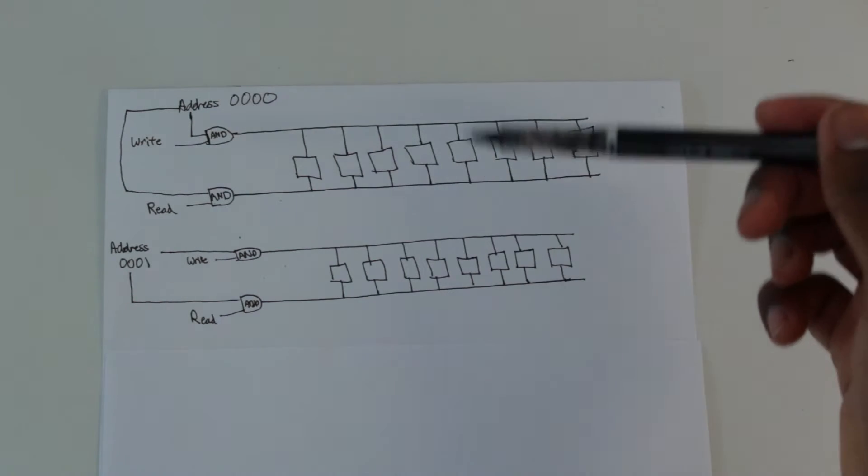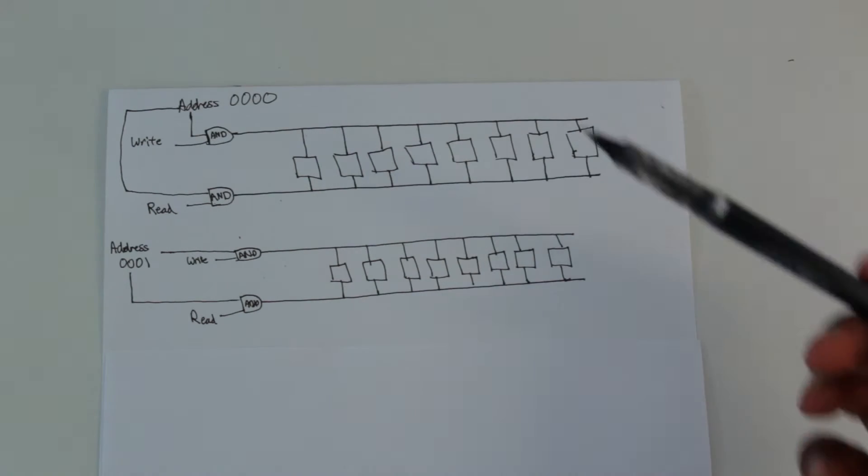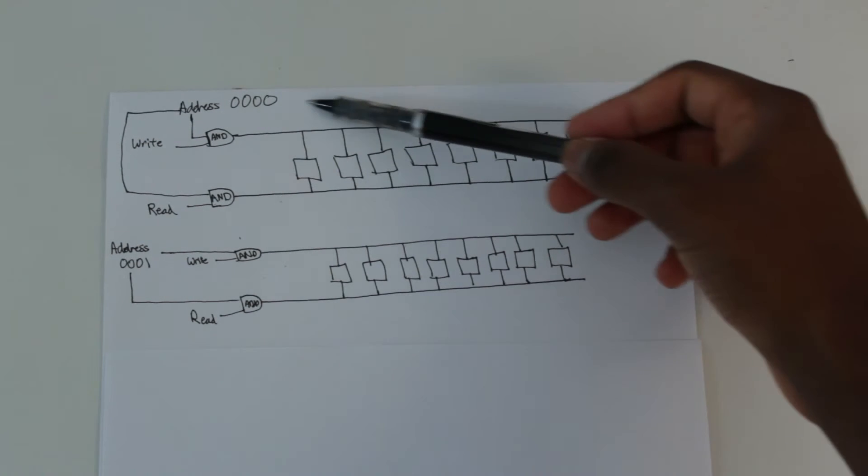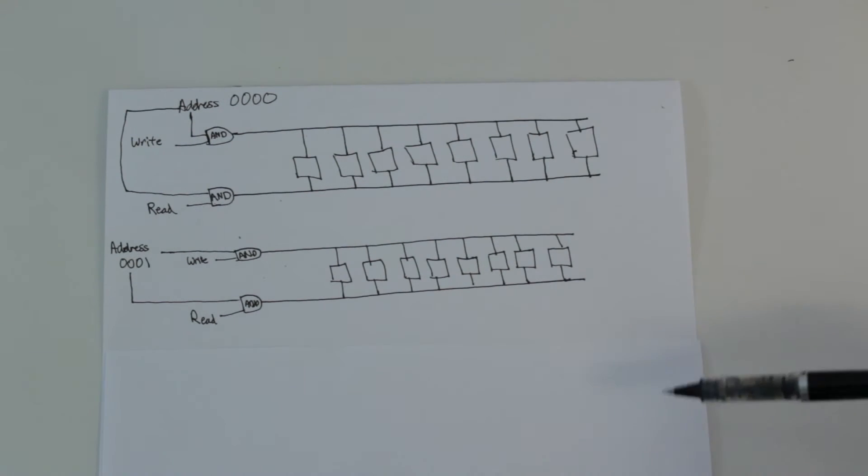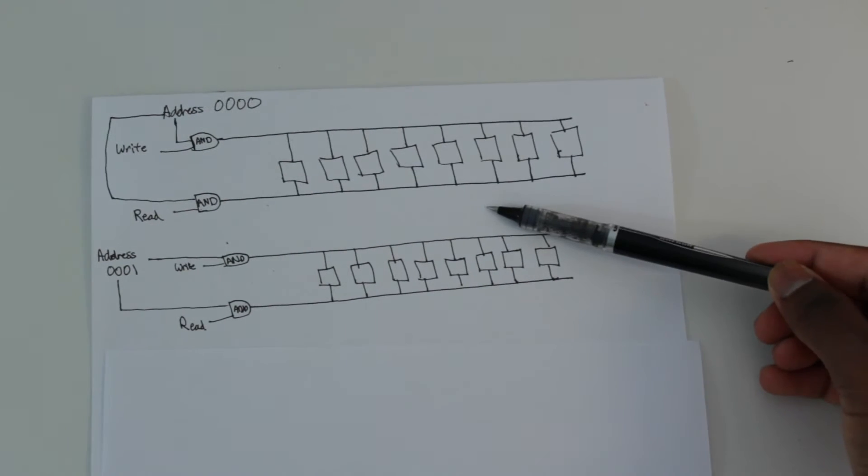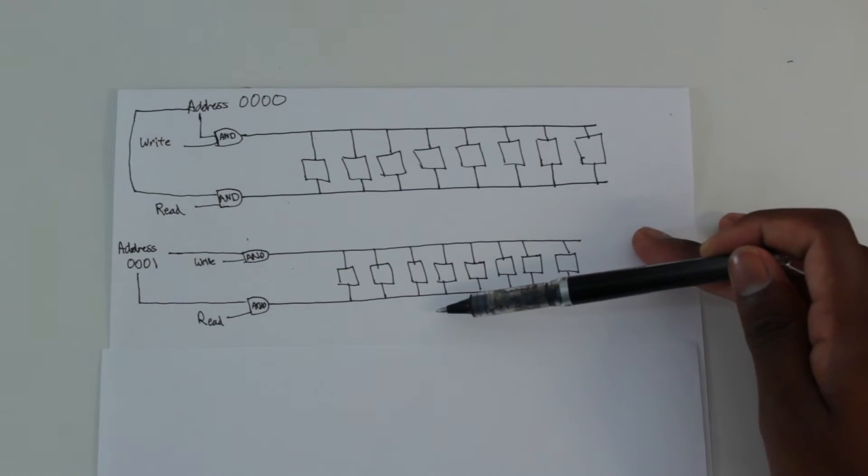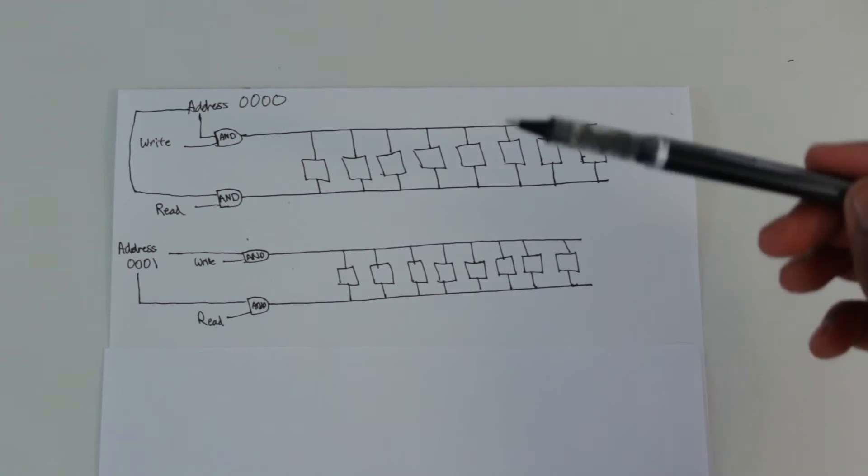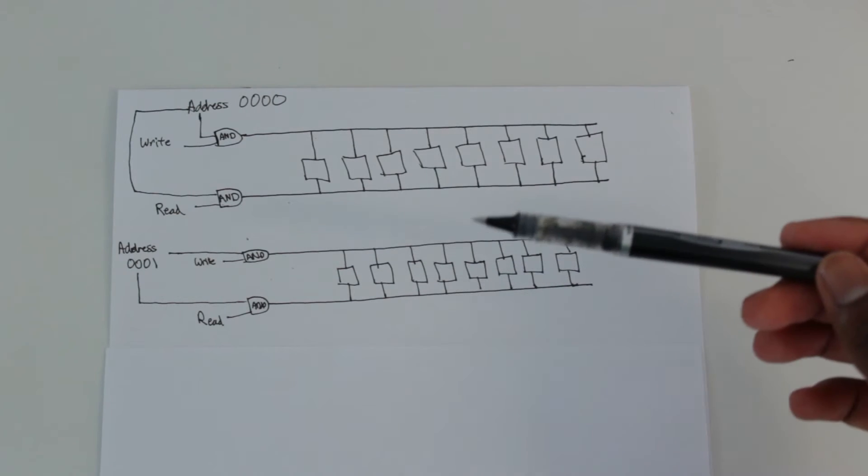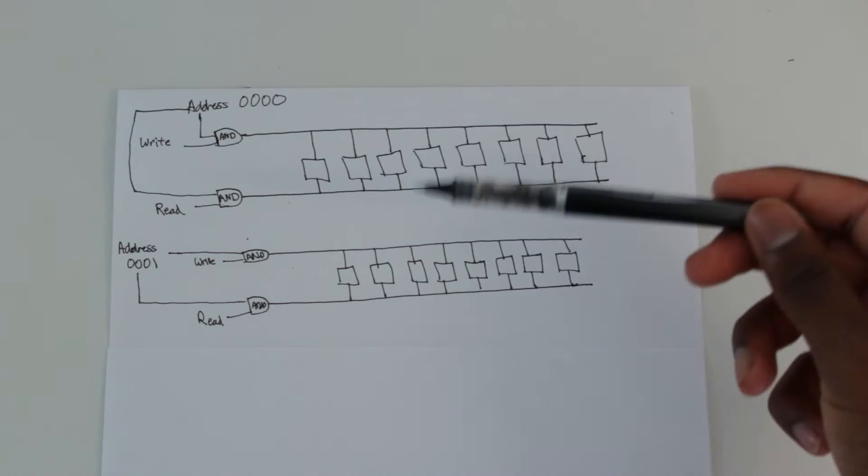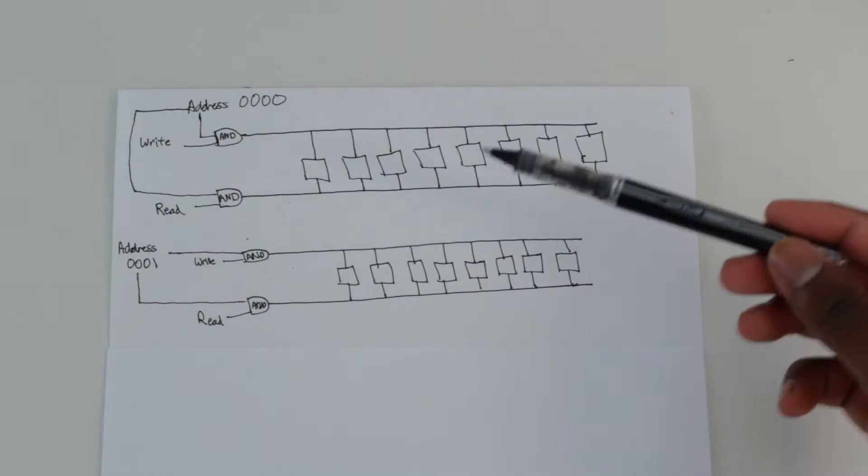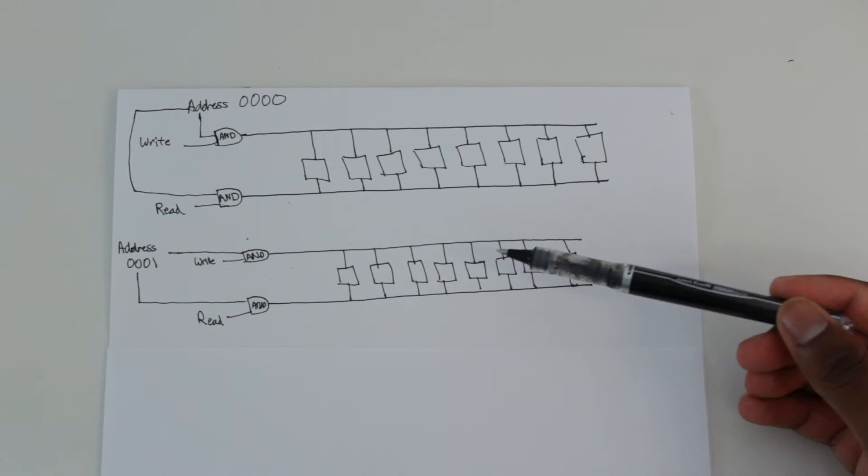So how do we create a circuit like this? This is the next question. How do we create a circuit that essentially has four inputs, 16 outputs, because there's 16 possible options, and only one of those outputs is high at a single time? That's what we want. Only one output is high or only one output is low, and then we can just negate everything. But the important thing is that only one output is different from the rest of the outputs at one time. How do we create a circuit like that?